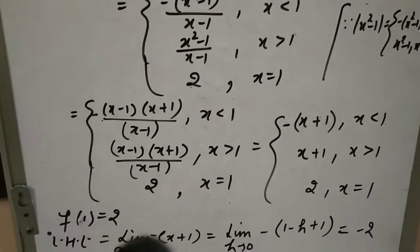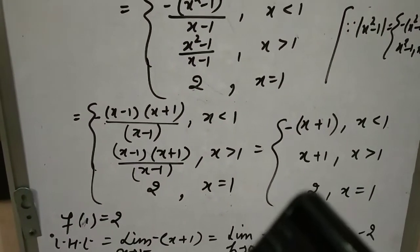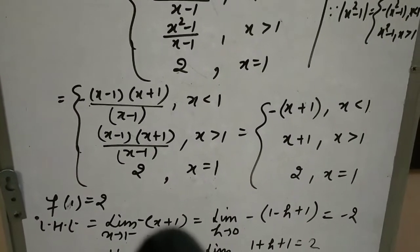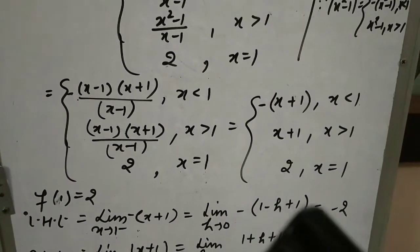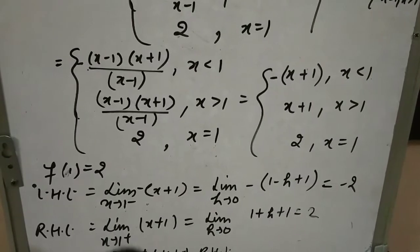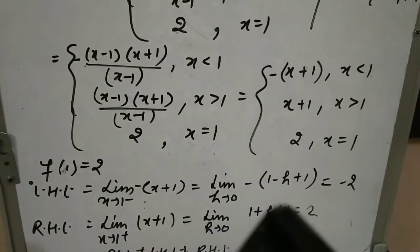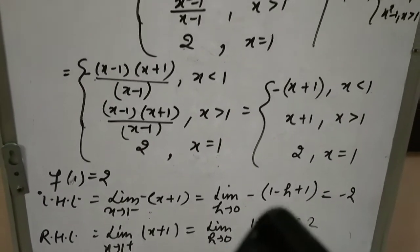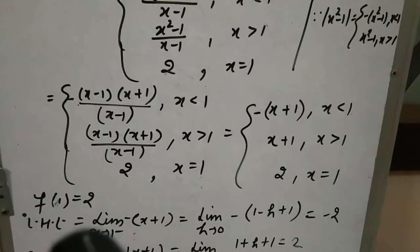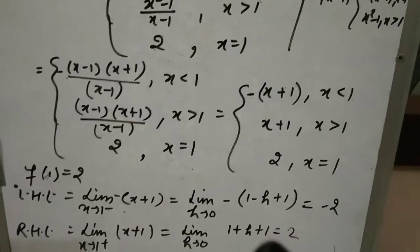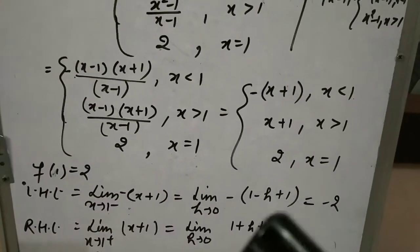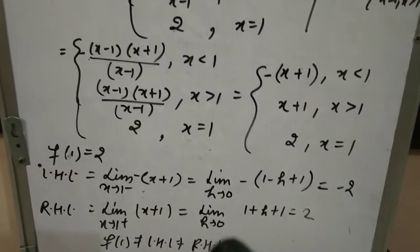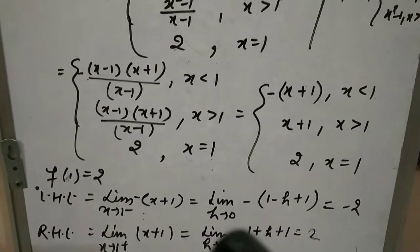f(1) = 2। Left hand limit: limit x→1⁻ -(x+1); x = 1-h put करके h→0: -(1+1) = -2। Right hand limit: limit x→1⁺ (x+1); x = 1+h put करके h→0: 1+1 = 2। f(1) = 2, LHL = -2, RHL = 2। f(1) ≠ LHL ≠ RHL, so function is discontinuous at x = 1।